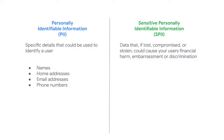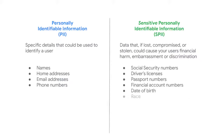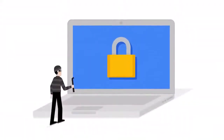SPII is data that, if lost, compromised, or stolen, could cause your users financial harm or embarrassment or potentially lead to their being discriminated against. This includes social security numbers, driver's license numbers, passport numbers, financial account numbers, date of birth, race, disability status, gender, sexuality, criminal history, and medical information. You can imagine how these pieces of data could cause someone harm if they got into the wrong hands, especially if used together. The good news is that you can protect your users' data by making privacy and security a part of your UX design and research practices.